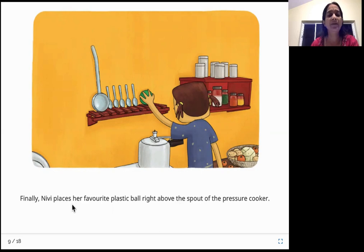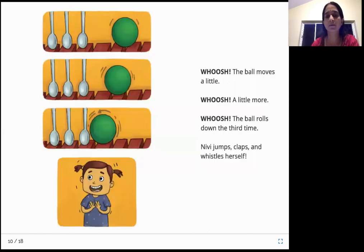Finally, Nivi places her favorite plastic ball right above the spout of the pressure cooker. So at last, what is the final thing that she keeps? It's a plastic ball that she keeps right above the whistle of the cooker. Ah, looks like she has made something really fun.